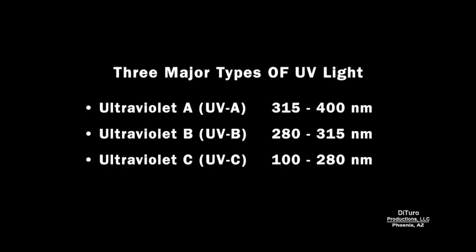Most UV light is invisible to the human eye. The three major types are UVA, B, and C. UVC has the shortest wavelength, ranging between 100 to 280 nanometers.